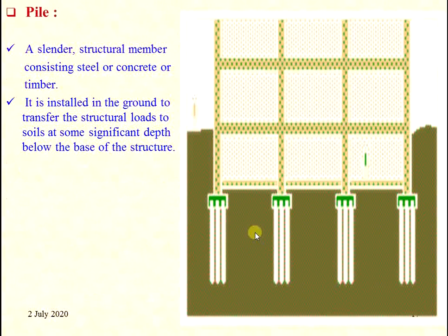A pile is a slender structural member consisting of steel, concrete, or timber. It is installed in the ground to transfer structural loads to the soil at a significant depth below the base of the structure. Pile foundation is constructed where the depth of foundation exceeds 5 meters or 15 to 20 feet.